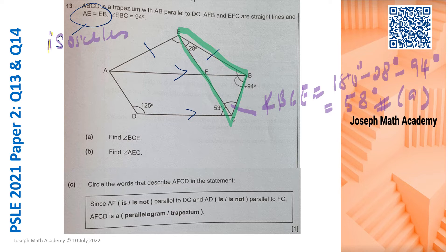Now part B — we are supposed to find angle ACE. Now where is angle ACE? Angle ACE is up there. I'm going to indicate it in blue — it's along here. This is angle ACE. Before we do that, it's very useful to plug in 58 here.